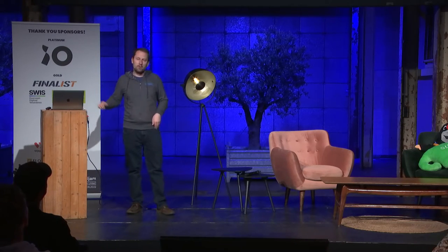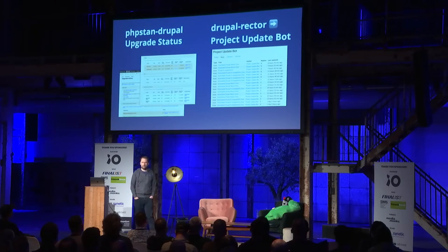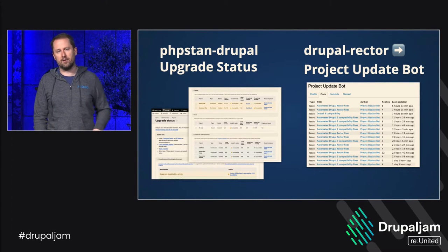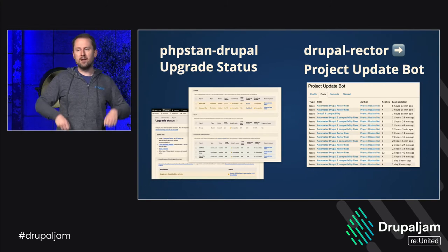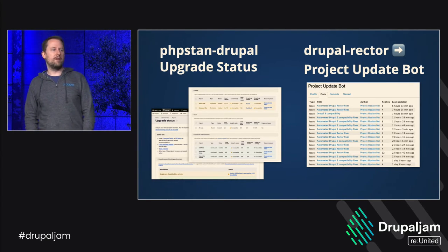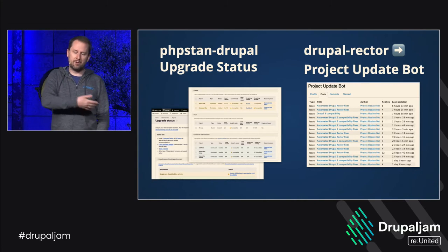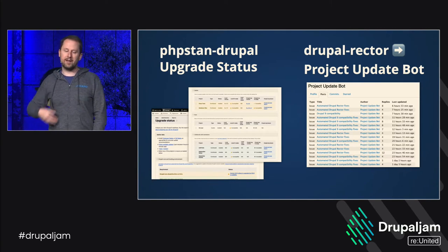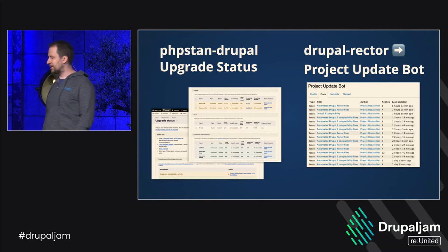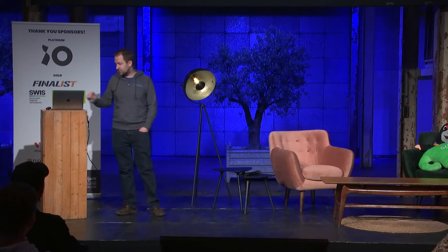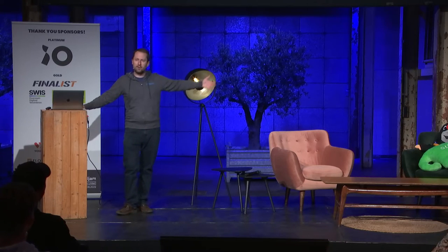Upgrade Status has XML and text output for CI integration. For automated fixes there's Drupal Rector, sponsored by Palantir.net, which now covers most Drupal 10 issues. There's also the Project Update Bot — not yet running for Drupal 10, but we've been working on updating it. We have an in-progress version that runs from Drupal 9 to Drupal 10 and will soon start posting patches to Drupal projects to update them to Drupal 10 compatibility.